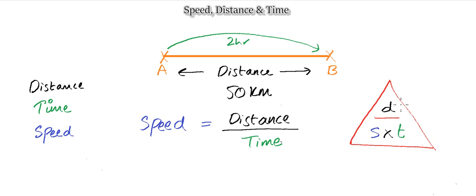So distance equals speed multiplied by time. The reason we use this triangle formula is to make things easier, especially for beginners. To find distance, put your finger on D — the formula becomes speed multiplied by time. To find time, cover T — the formula becomes distance divided by speed. To find speed, cover S — the formula becomes distance divided by time. This approach works for other formulas too.